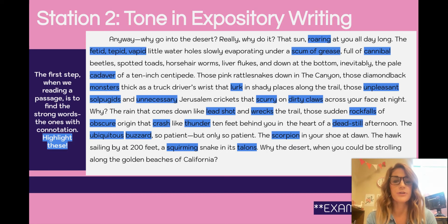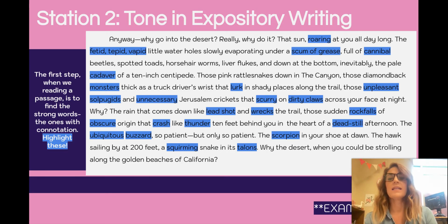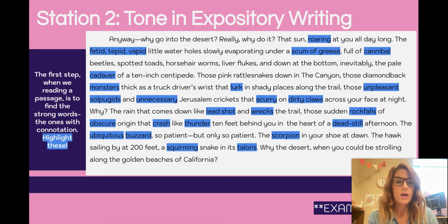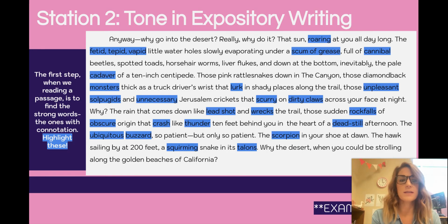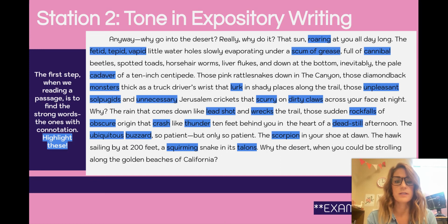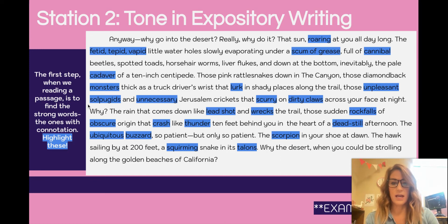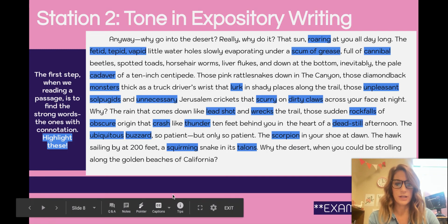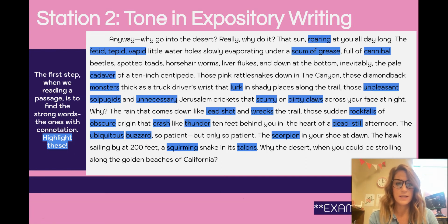The passage reads: Why go into the desert? Really, why do it? The sun roaring at you all day long, the fetid, tepid, vapid little water holes slowly evaporating under a scum of grease, full of cannibal beetles, spotted toads, horsehair worms, liver flukes, and down at the bottom inevitably, the pale cadaver of a 10-inch centipede. Those pink rattlesnakes down in the canyon, those diamondback monsters thick as a truck driver's wrist that lurk in shady places along the trail. Those unpleasant solifugids and unnecessary Jerusalem crickets that scurry on dirty claws across your face at night.